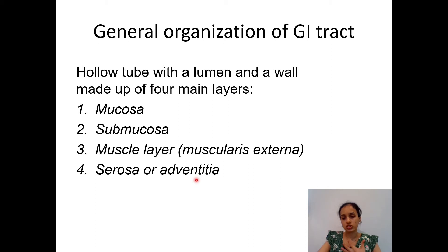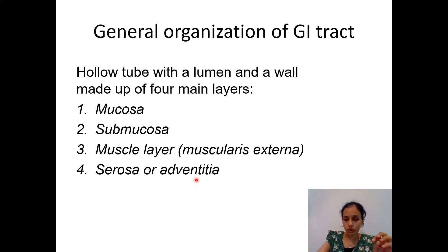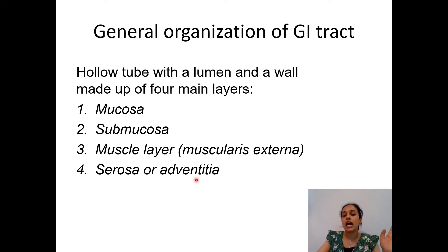The outermost layer is called serosa or adventitia depending on the organ's position relative to the peritoneum. Organs enclosed within the peritoneum are intraperitoneal and have a serosa, while organs not enclosed — like retroperitoneal organs — have just a connective tissue layer called adventitia. These are the four main layers of the GI tract: mucosa, submucosa, muscularis externa, and serosa or adventitia.